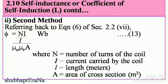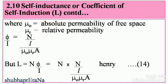Second method to find self-inductance. Referring back to Equation 6 of section 2.27, where we learned about reluctance, we found the formula for flux: φ = NI / (l / (μ₀μᵣA)) Webers. This is Equation 13, where N is the number of turns, I is the current, l is the length in meters, A is the area of cross-section in square meters, μ₀ is the absolute permeability of free space, and μᵣ is the relative permeability. Rearranging, we get φ/I = N / (l / (μ₀μᵣA)).